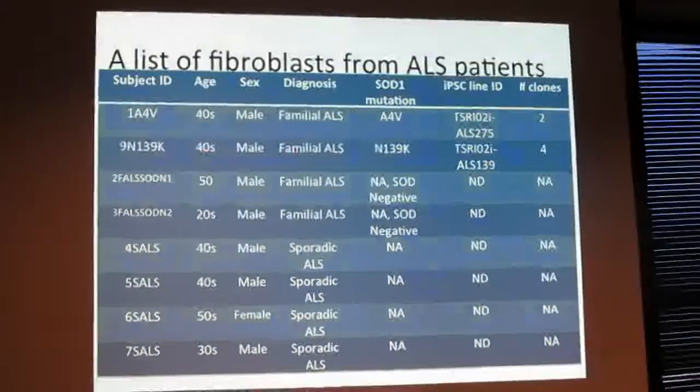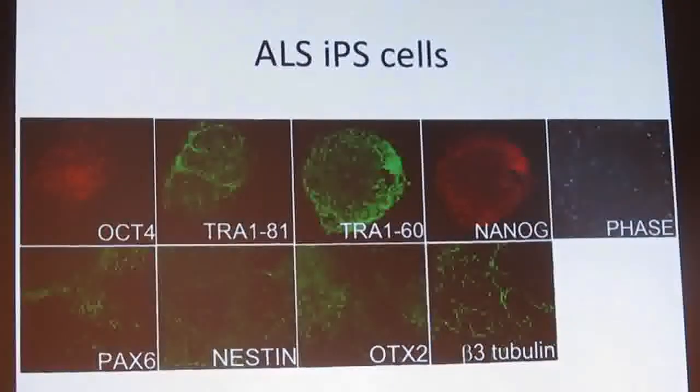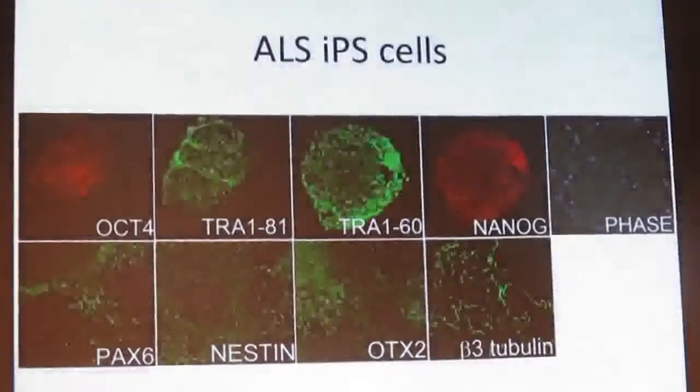We have made several lines from the fibroblasts of the patients. For example, we have listed here two familial cases. We have several clones from each that we've made into iPS cells. We also have two lines that we made from sporadic ALS. I'm showing you here the marker expression of the iPS cells. These markers are the typical markers for iPS cells that are expressed in the ALS patient iPS lines. After differentiation, we were able to make these cells become neural lineage-specific cells.